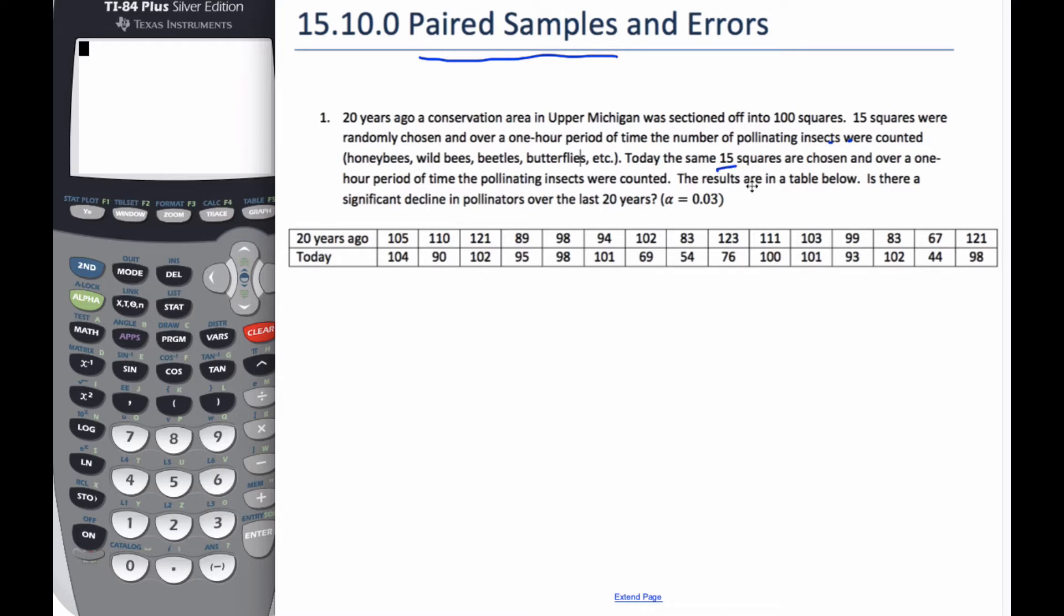Today, the same 15 squares are chosen, and over a one hour period of time, insects were counted yet again with this table. Is there a significant decline in pollinators over the last 20 years with an alpha level of 0.03?